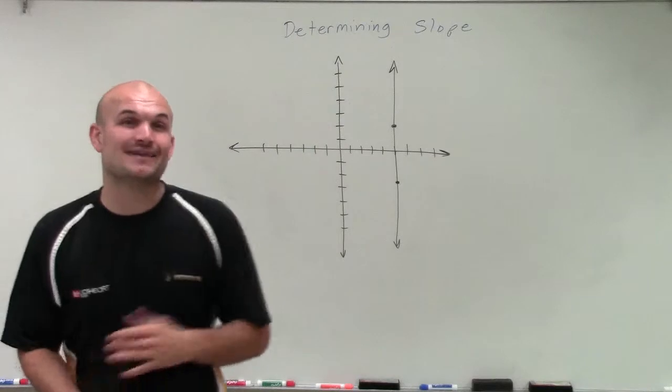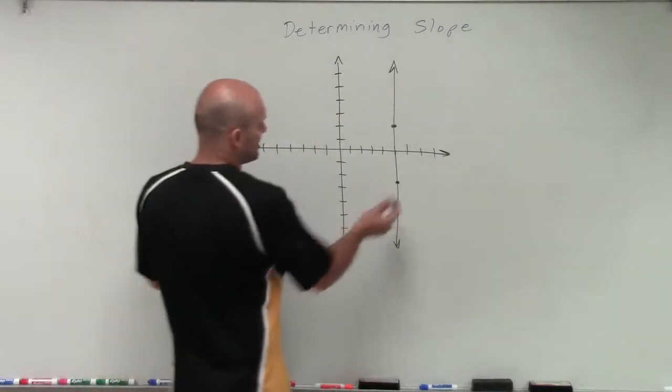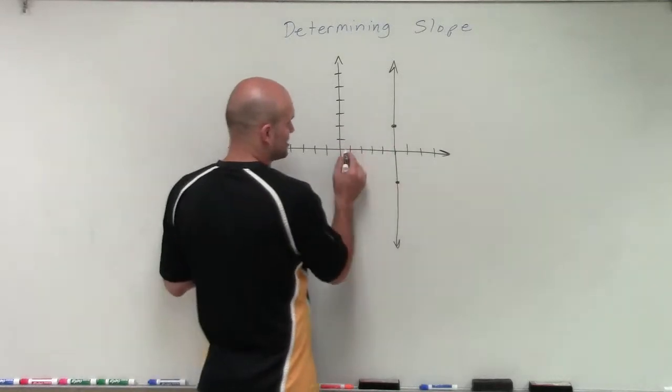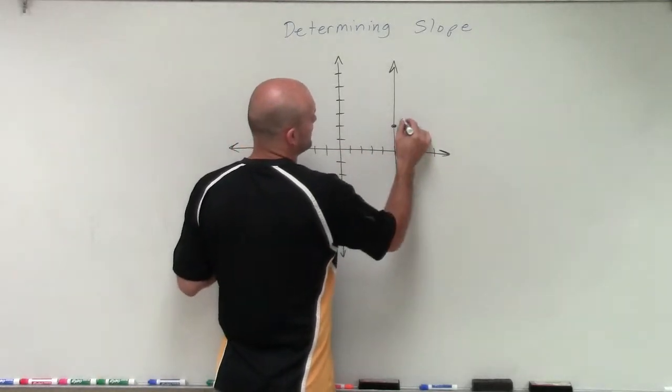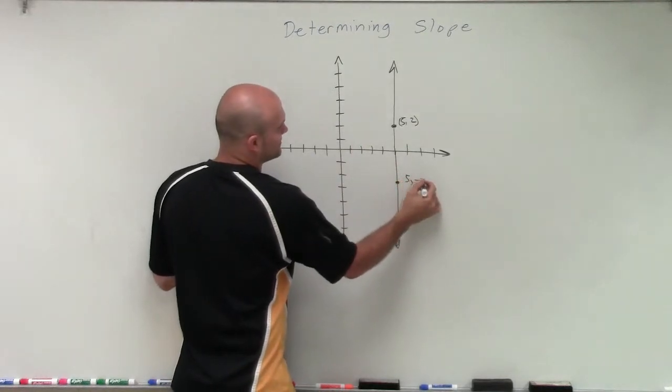But then we kind of throw a vertical line at them and it's like, what do I do? Because if I have these two points, which I created, these two coordinate points which is going to be at 1, 2, 3, 4, 5. So I have the point 5 comma 2 and 5 comma negative 2.